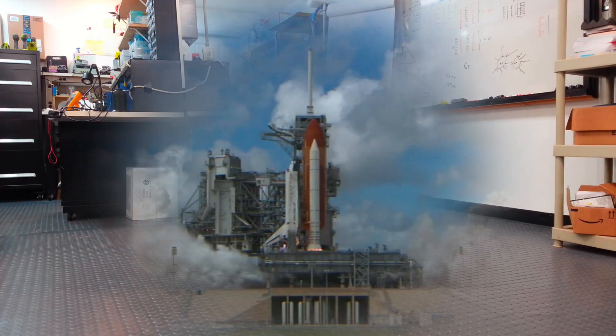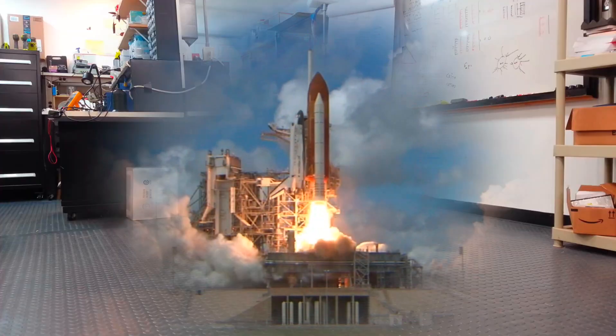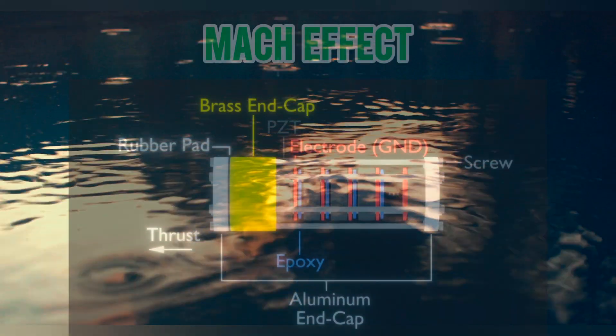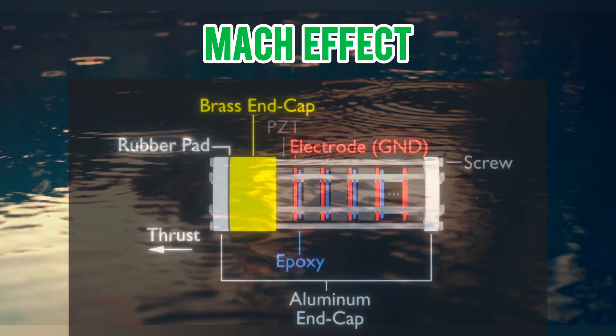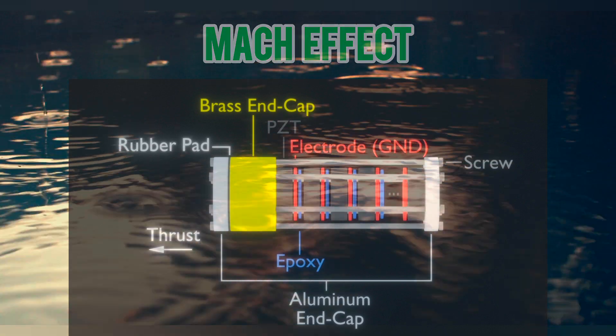In contrast, propellantless systems exploit novel physical principles to produce force. The most notable among these concepts is the Mach effect, which posits that transient mass fluctuations within an accelerating object can generate a net force.